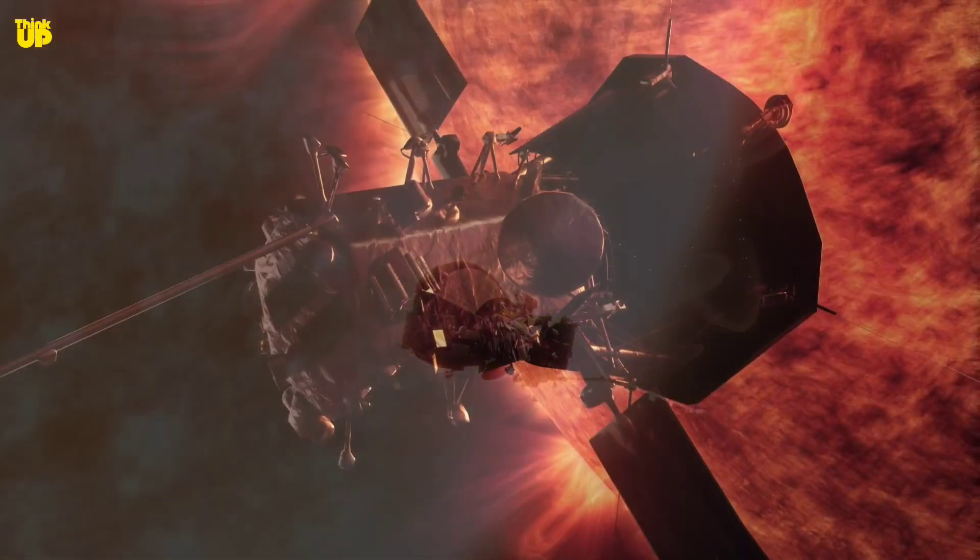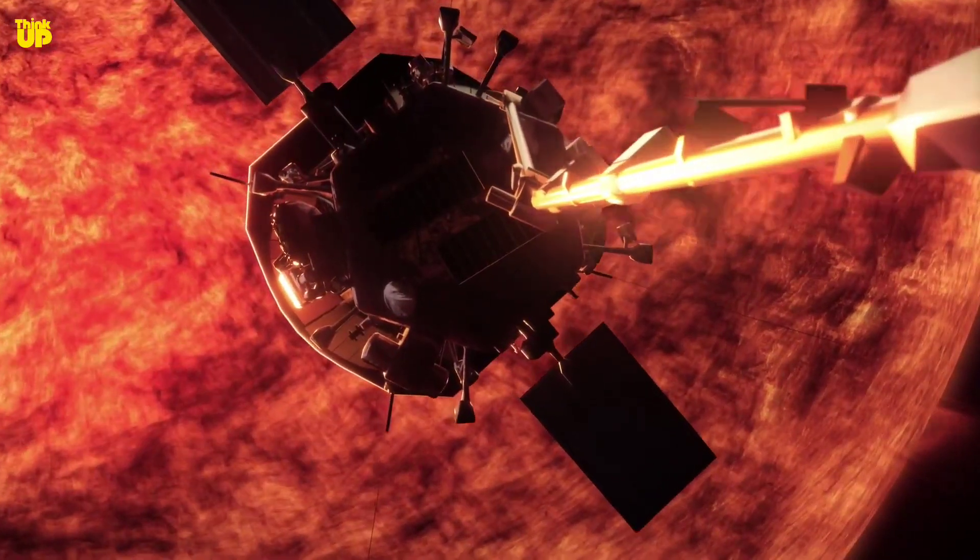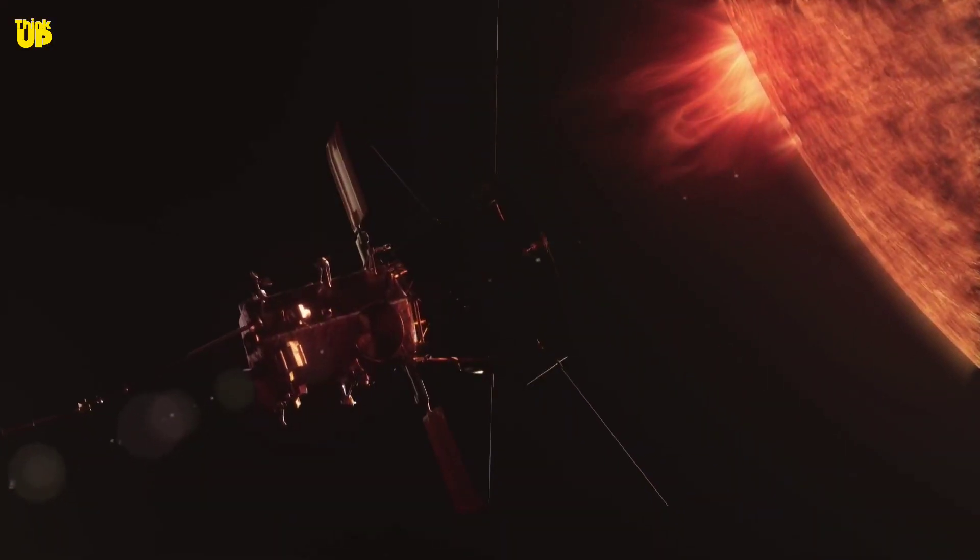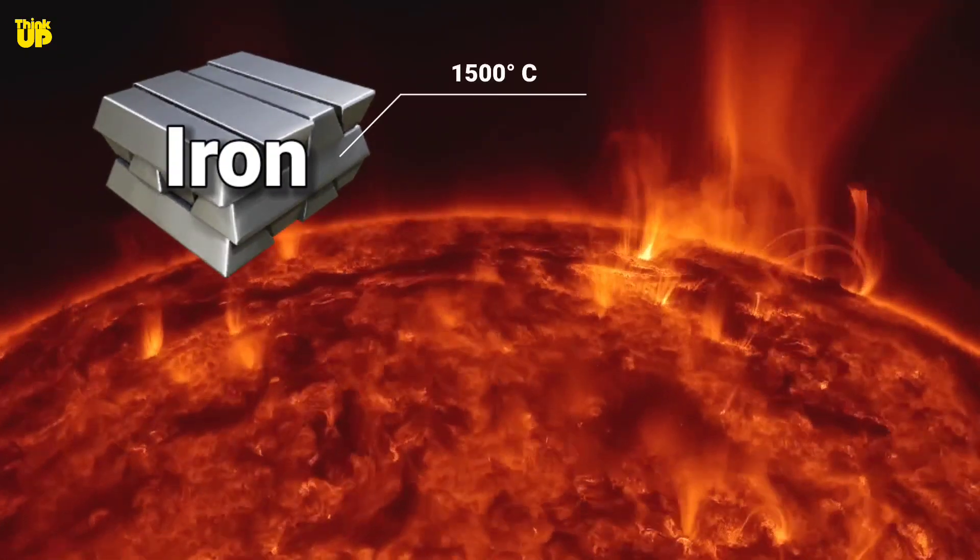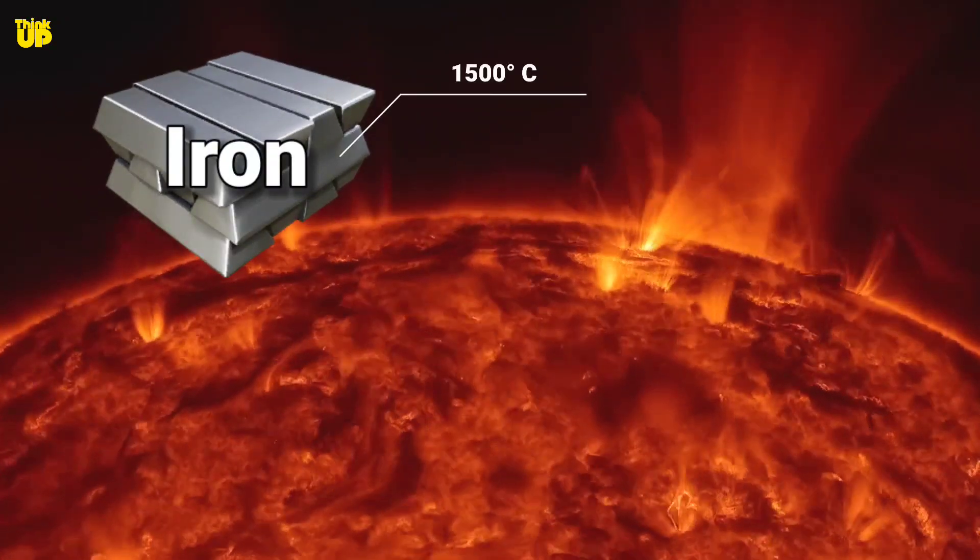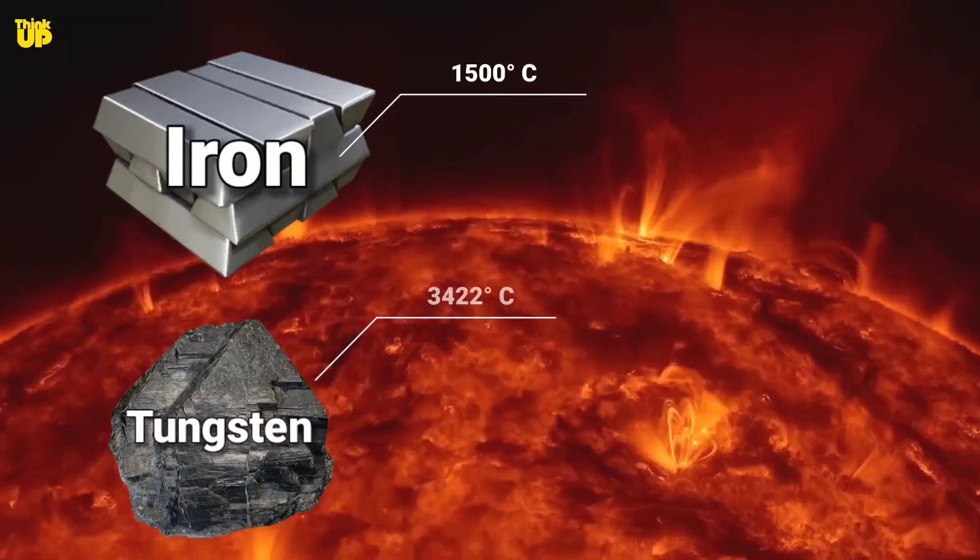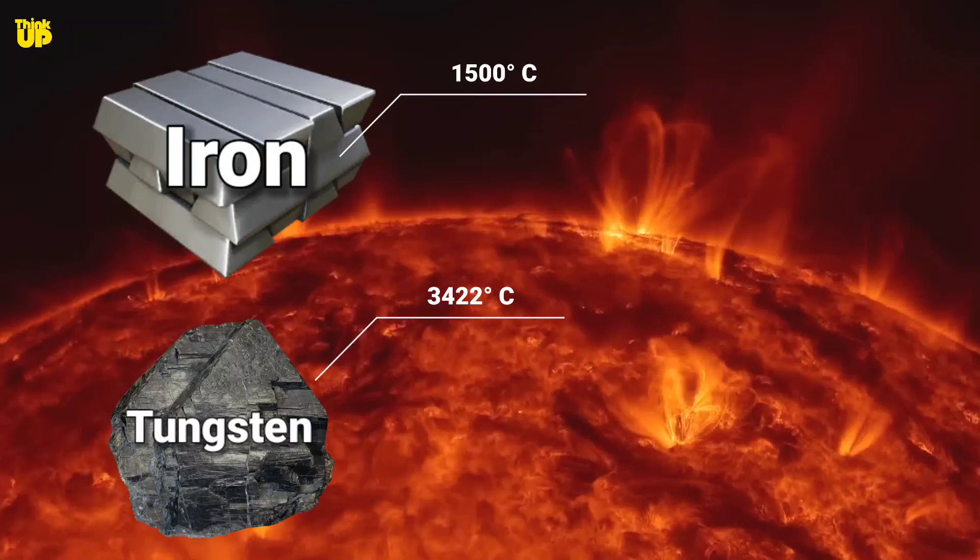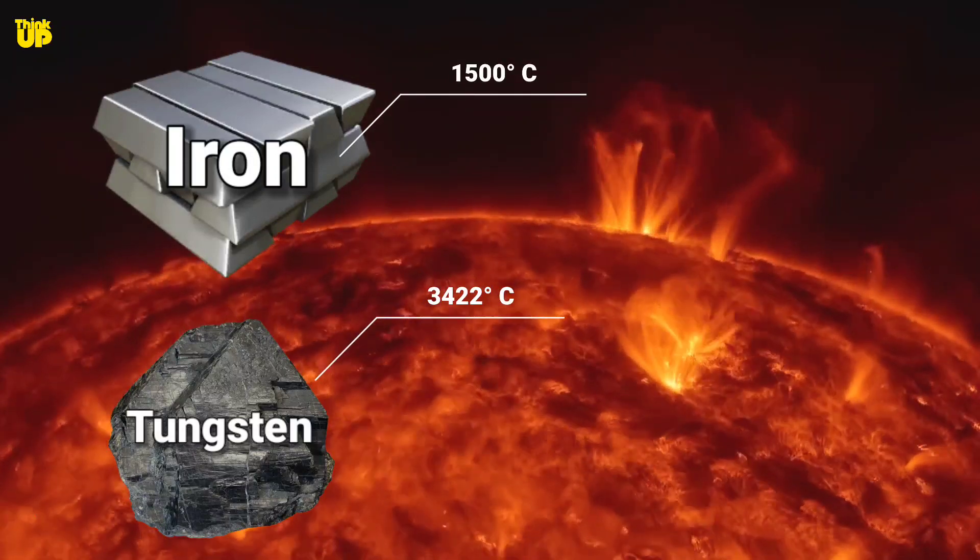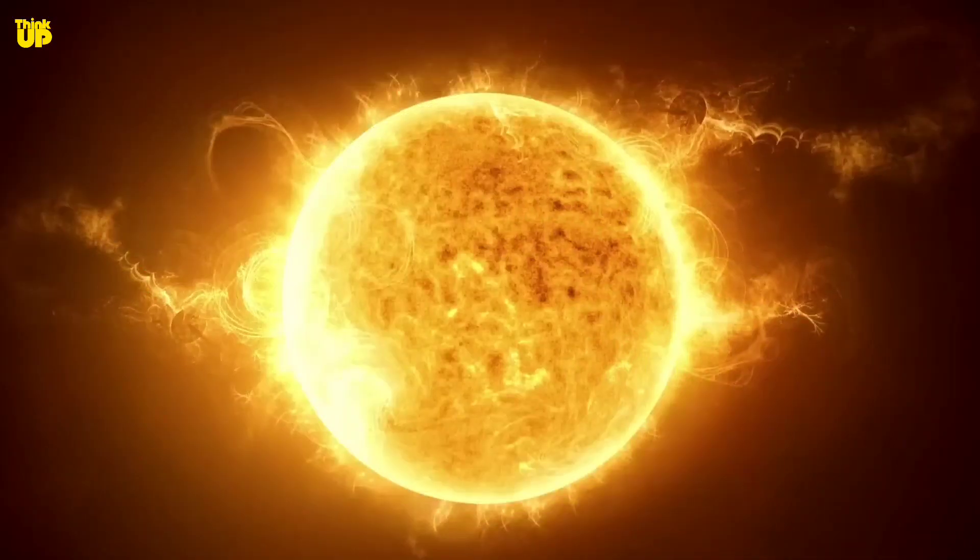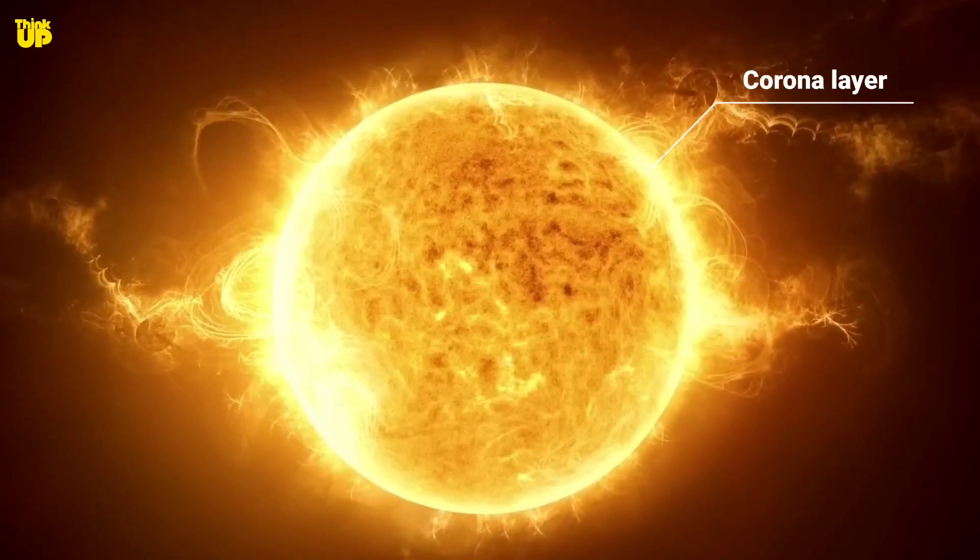Even in temperatures exceeding 500,000 degrees Celsius, obviously, this task was not easy due to the extreme heat, making it a challenging endeavor. Iron has a melting temperature of 1,500 degrees Celsius, while tungsten, which is the hardest metal in the world, has a melting temperature of 3,422 degrees Celsius. This means that the surface of the sun can melt both these metals within an instant. Now imagine what would happen in a corona layer where the temperature is millions of degrees Celsius.